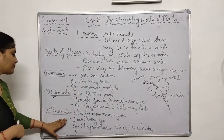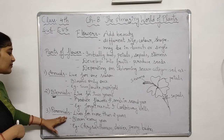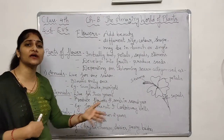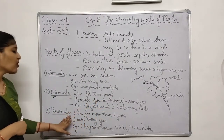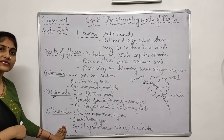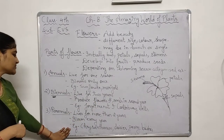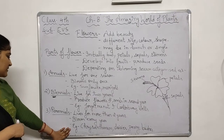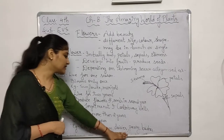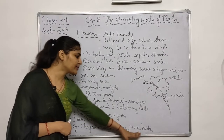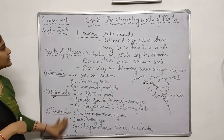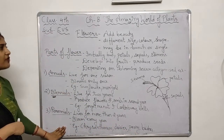The third type is perennial plants. Perennial plants live for more than two years, and every year they produce flowers and seeds. Examples of perennial plants are Chrysanthemum, Daisies, and Peony bushes. With this, we have completed the portion on flowers.